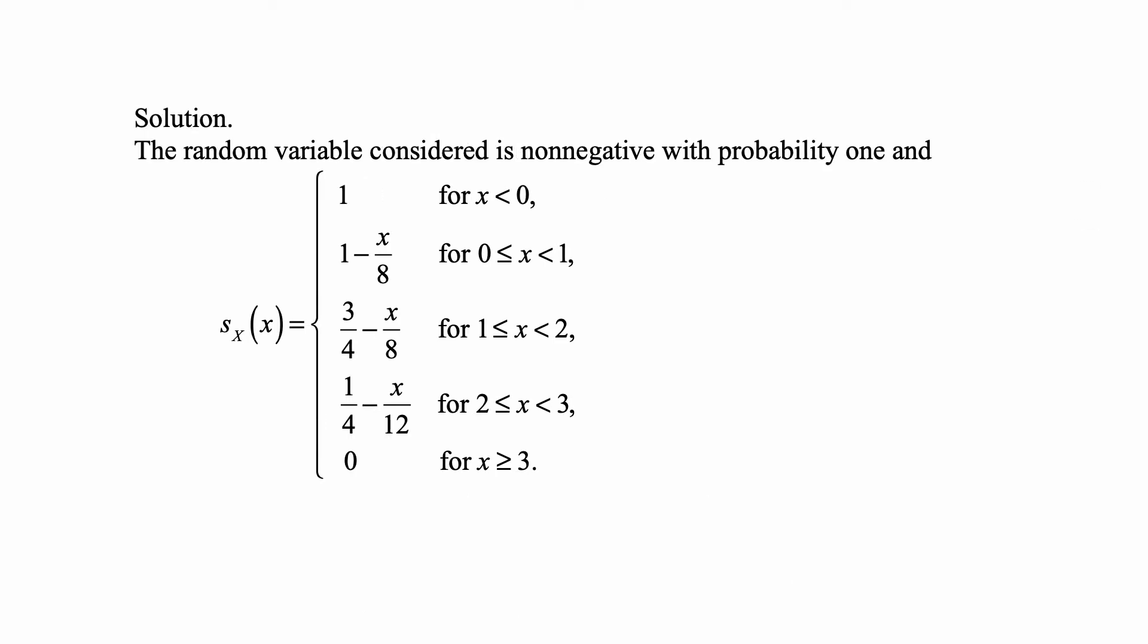And here's the solution. The random variable considered is non-negative with probability 1, and the survival function of it is equal to 1 for x less than 0, 1 minus x over 8 for x between 0 and 1, 3/4 minus x over 8 for x between 1 and 2, 1/4 minus x over 12 for x between 2 and 3, and then 0 for x greater than or equal to 3.